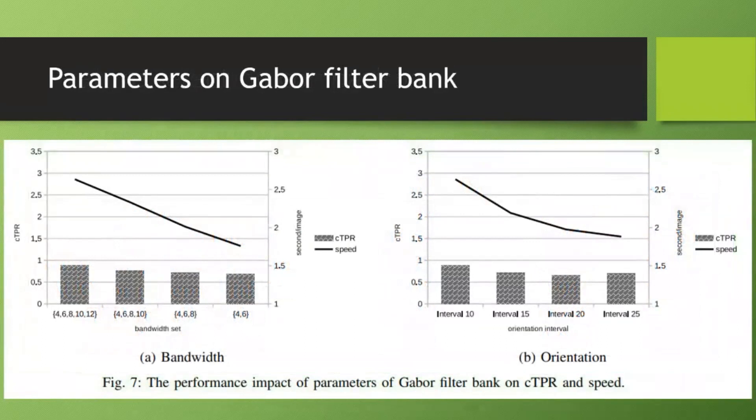Next, I show different combinations of parameters in our Gabor filter bank. When we decrease the number of orientations and/or bandwidth, the CTPR will also decrease while processing speed will increase. In our system, we use 90 filters in our Gabor filter bank. Even if it may be slower sometimes, we think accuracy matters.